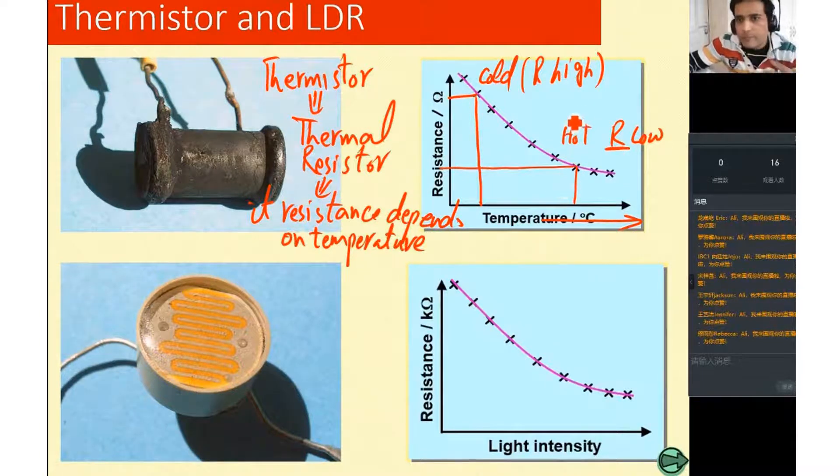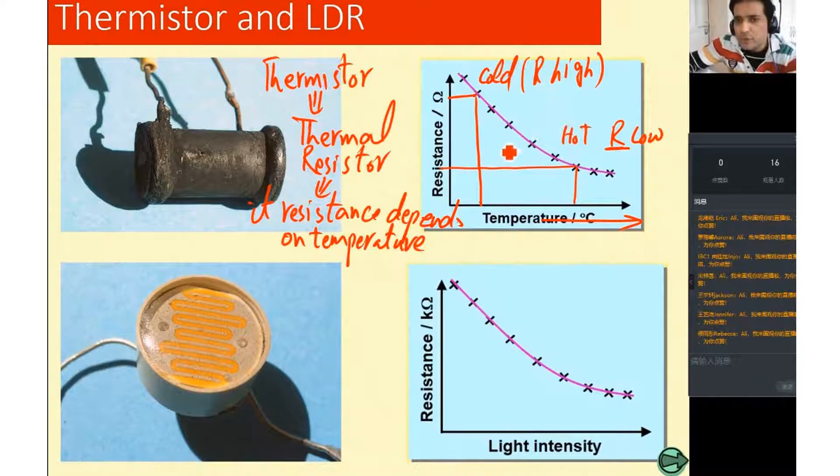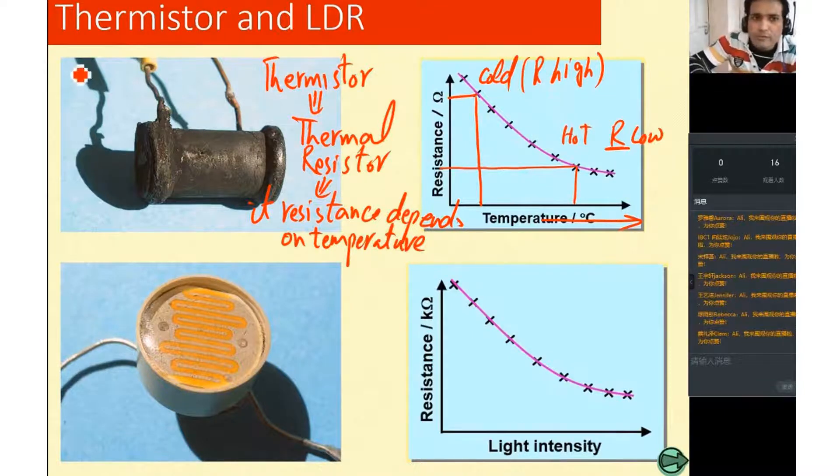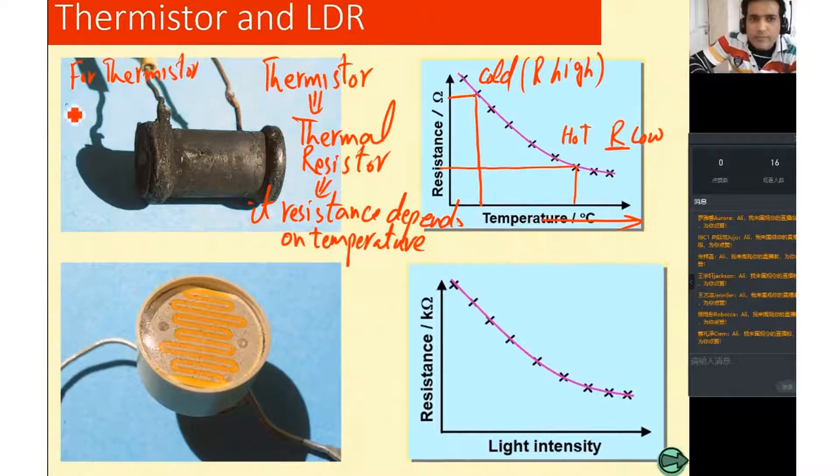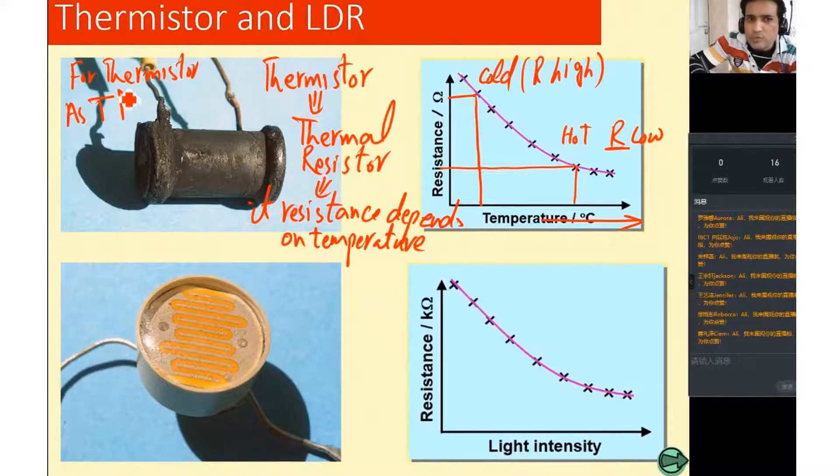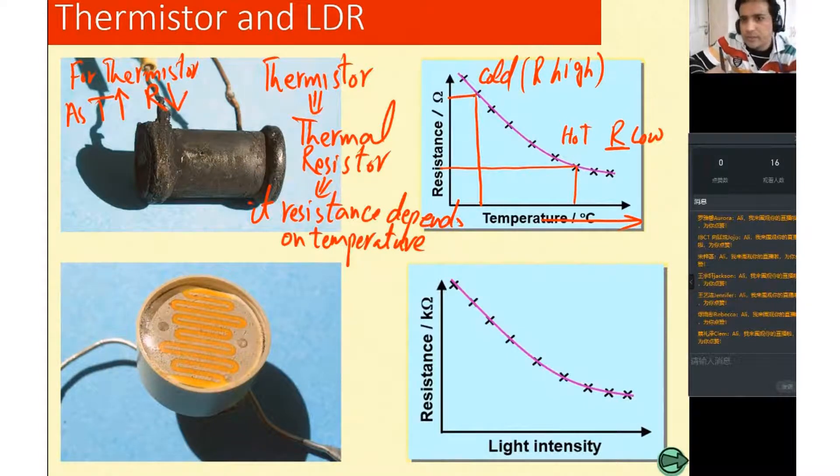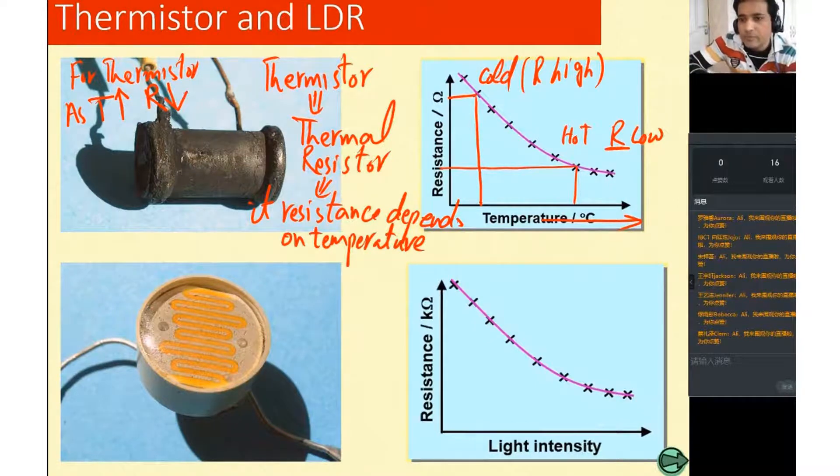So from here we can conclude that for thermistor, we can say that as temperature increases, this is opposite to filament. As temperature increases, its resistance decreases. This is just opposite to filament lamp.